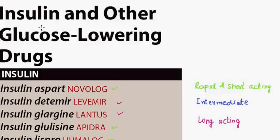Now comes the insulin and other glucose-lowering drugs, which are also called hypoglycemics and are used to treat diabetes and related disorders.